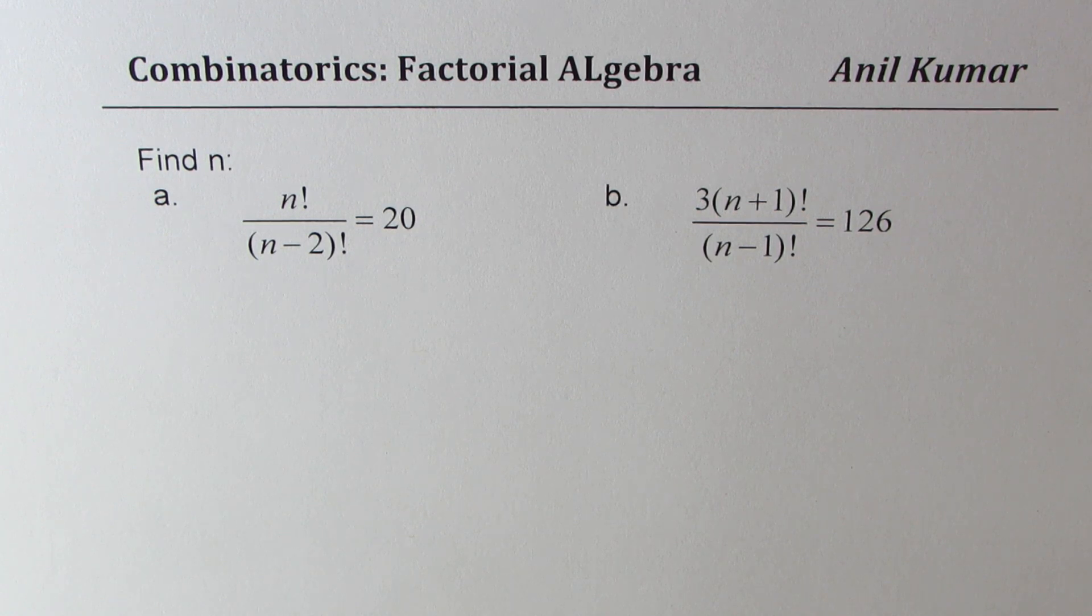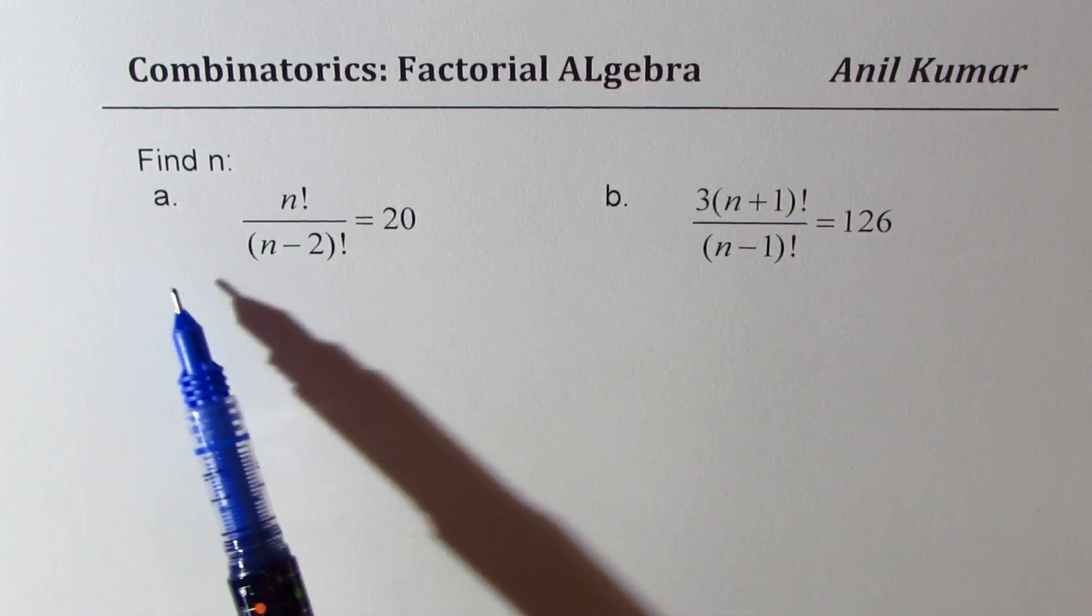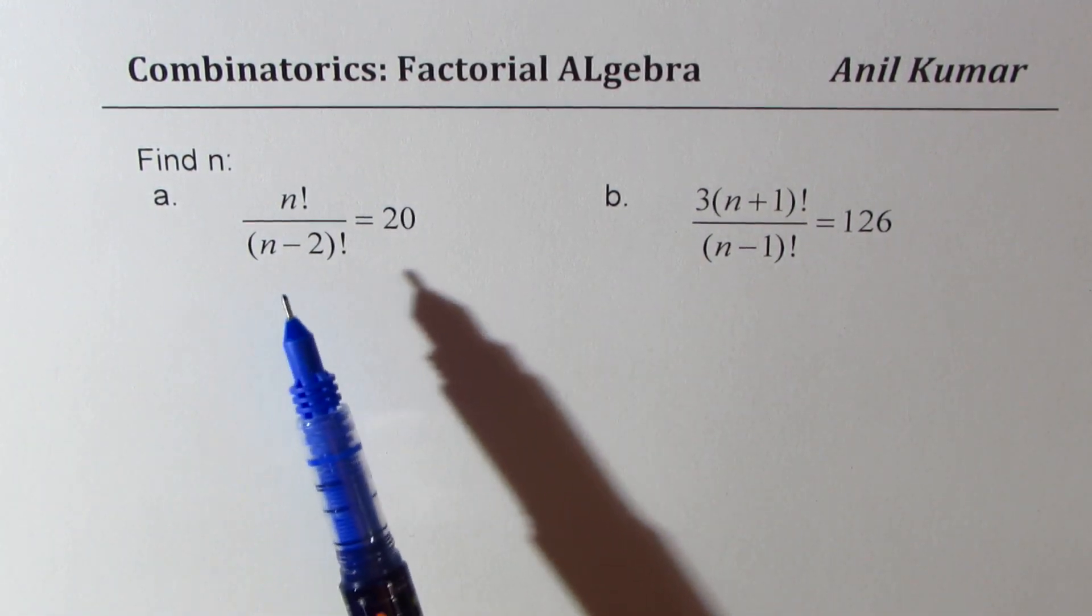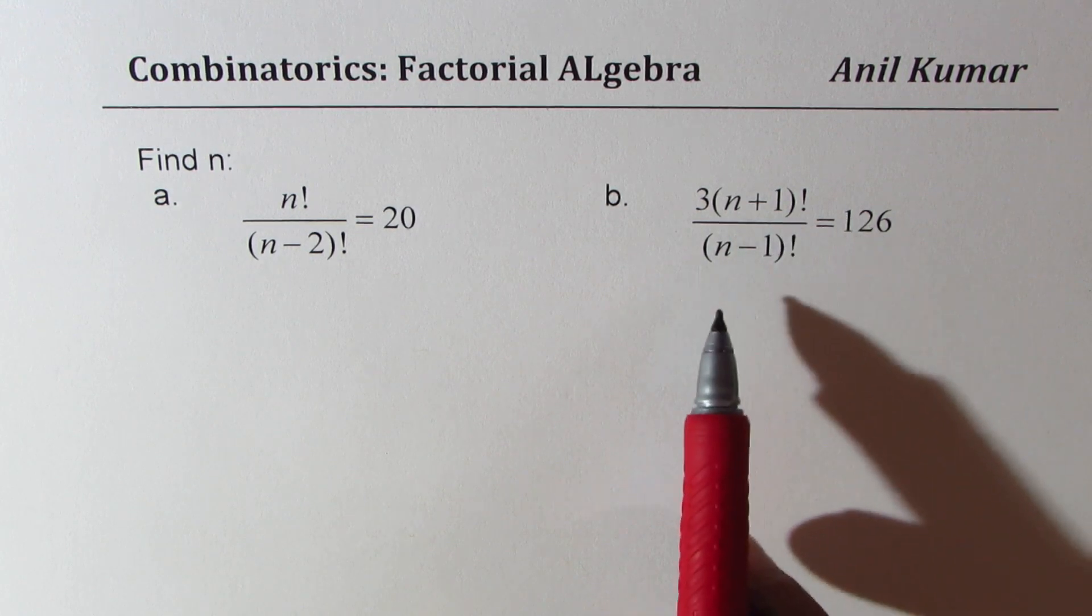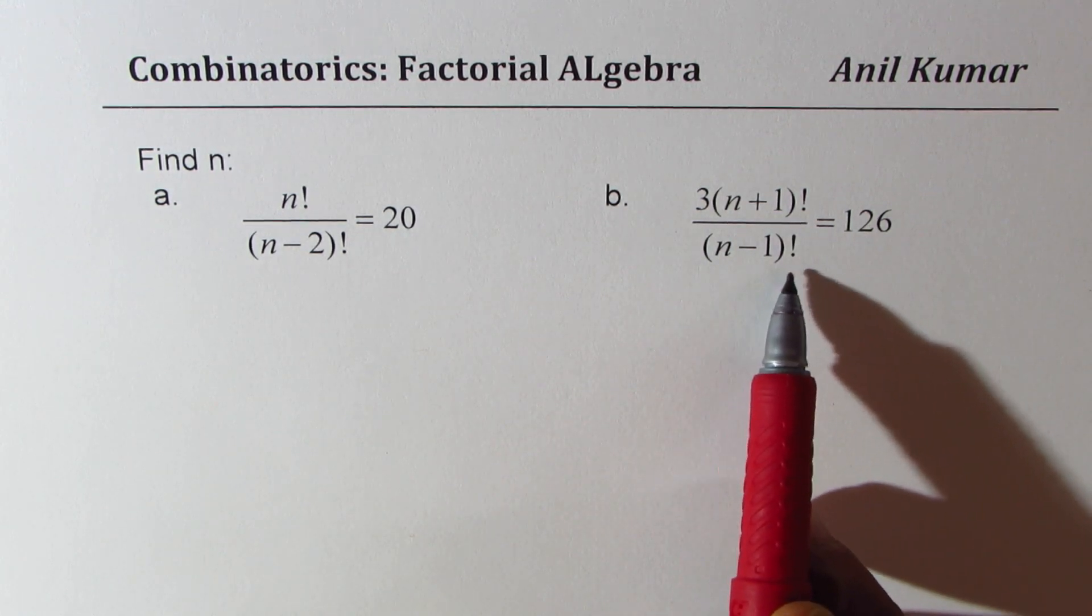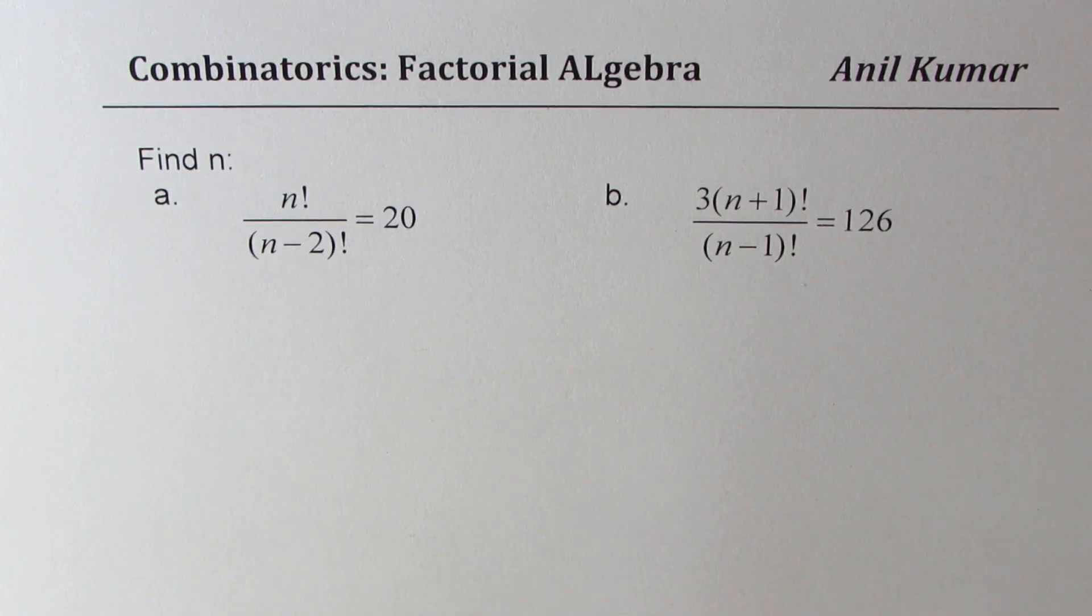We have two questions here. Find n for: (a) n factorial divided by (n-2) factorial equals 20, and (b) 3 times (n+1) factorial divided by (n-1) factorial equals 126.